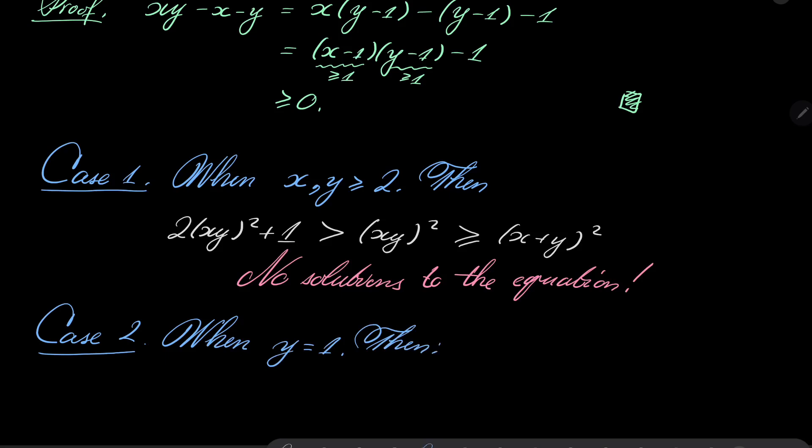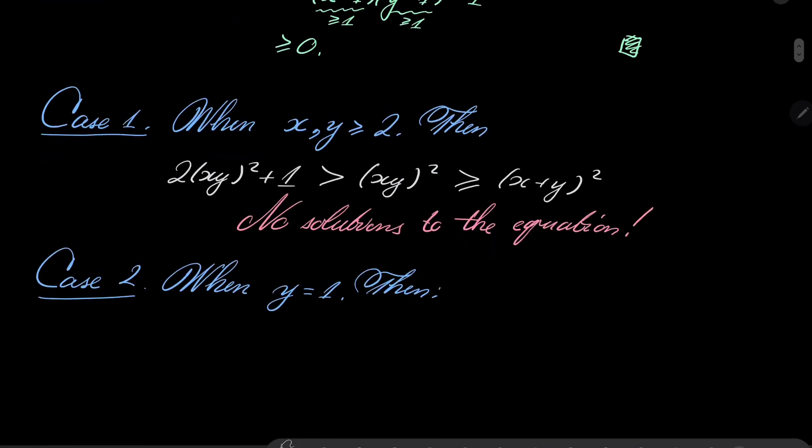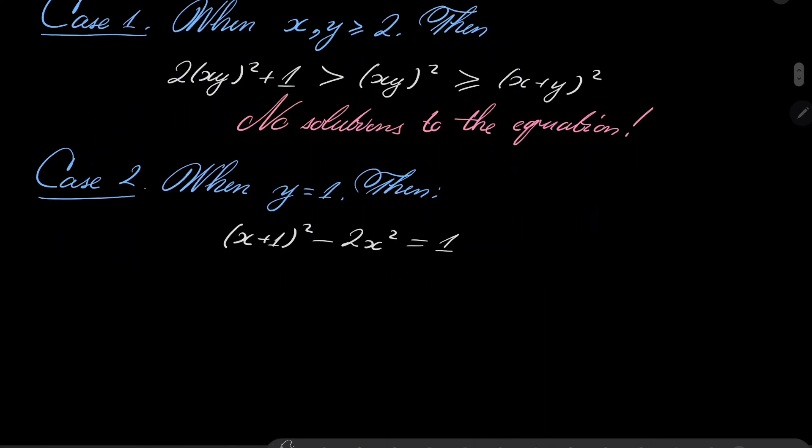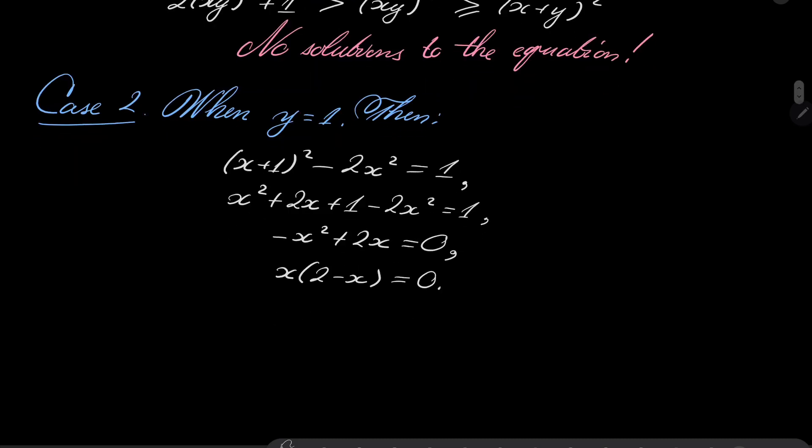Notice that then, if y = 1, our equation really says that (x+1)² - 2x² = 1. But notice that we can expand this equation. It says that x² + 2x + 1 - 2x² = 1, and this says that -x² + 2x = 0, so we have x(2-x) = 0, and now remember that we are dealing with positive numbers, so x cannot be 0, so the only option is that x = 2.